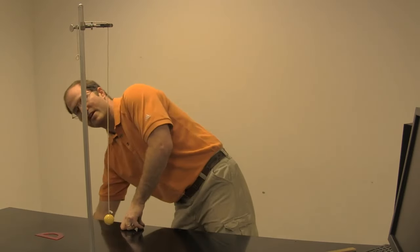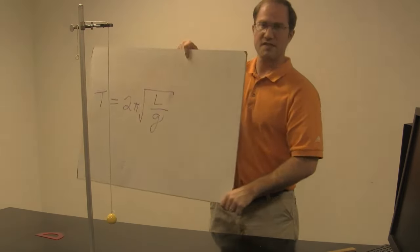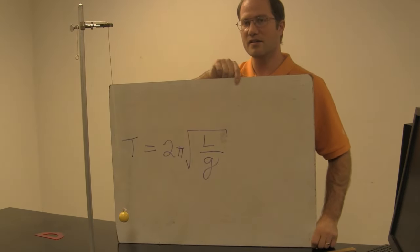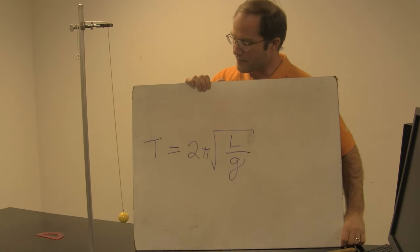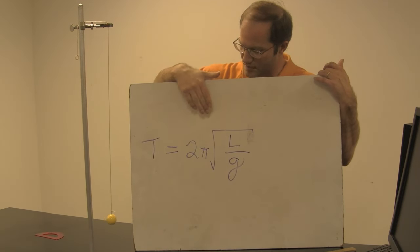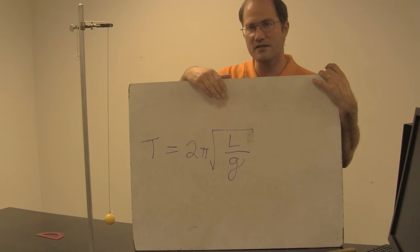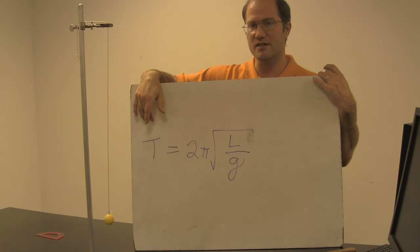Now, I have an equation that we want to show you. This is the equation for the period of a simple pendulum. It says the period is equal to two pi times the square root of the length over g. T is the period of the pendulum.